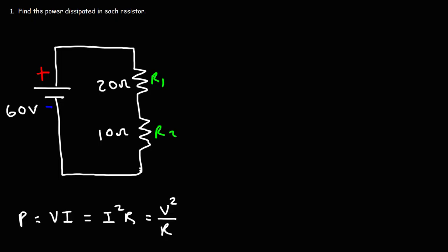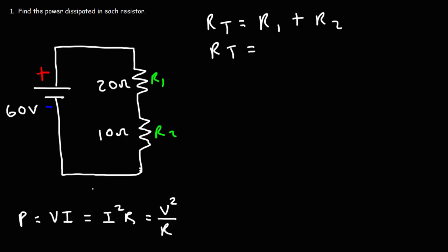The first thing we need to do is calculate the total resistance of the series circuit. In a series circuit, RT is just the sum of each resistor. So the total resistance is R1 plus R2, which is 20 plus 10, giving us 30 ohms.